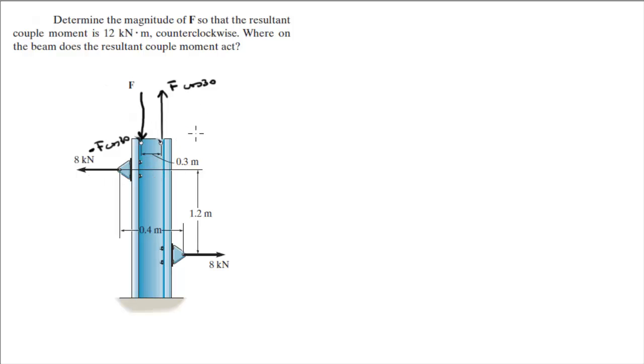So now that we have a much easier problem, we're going to do sum of the moments, assuming counterclockwise is positive. So sum of the moments is equal to 12 kilonewton meters because that's what we were told. We are supposed to give you an F that would make this true for the sum of the moments to be 12 kilonewton meters.